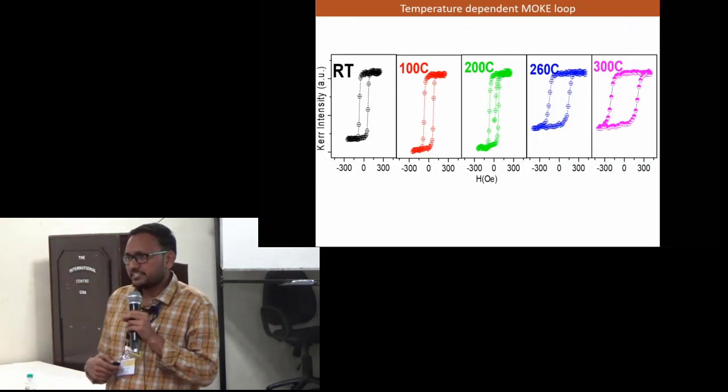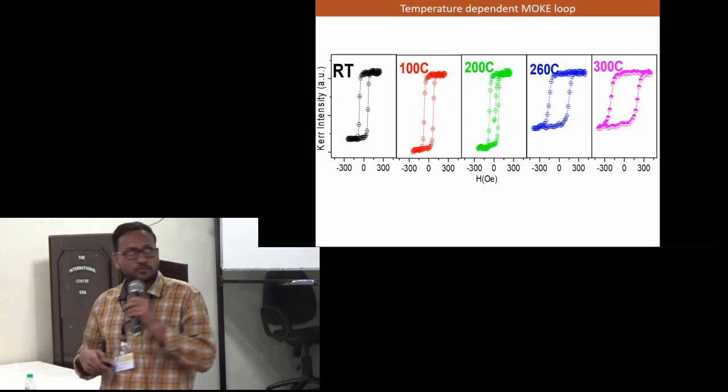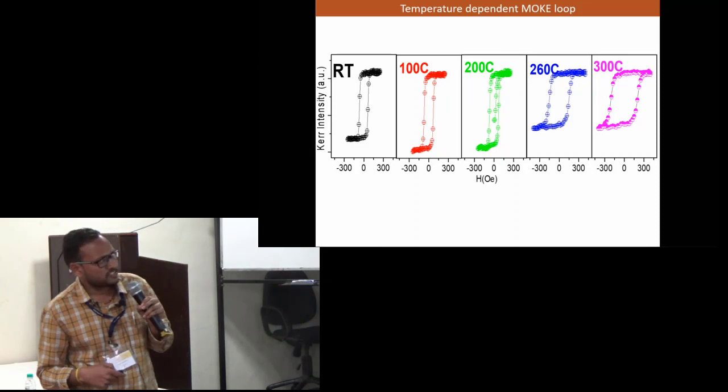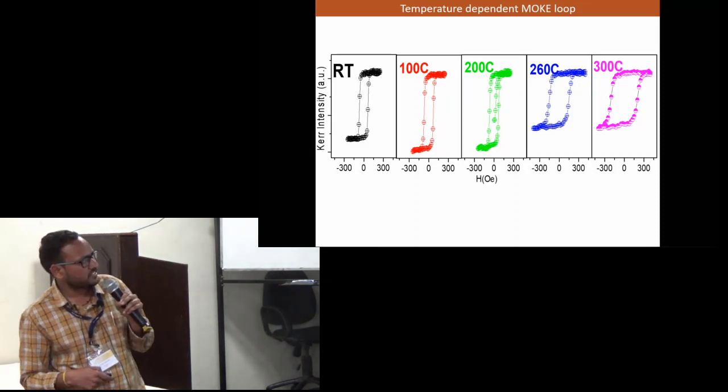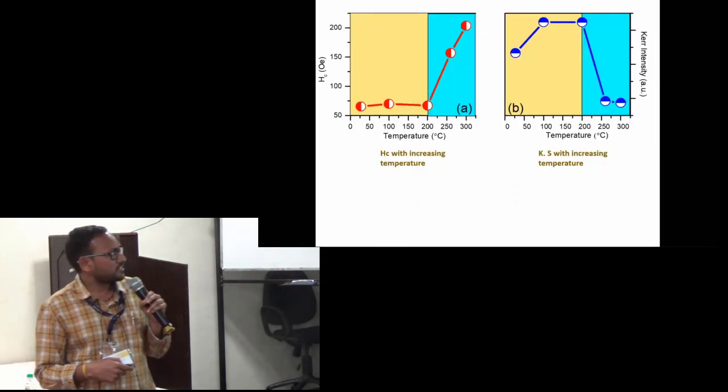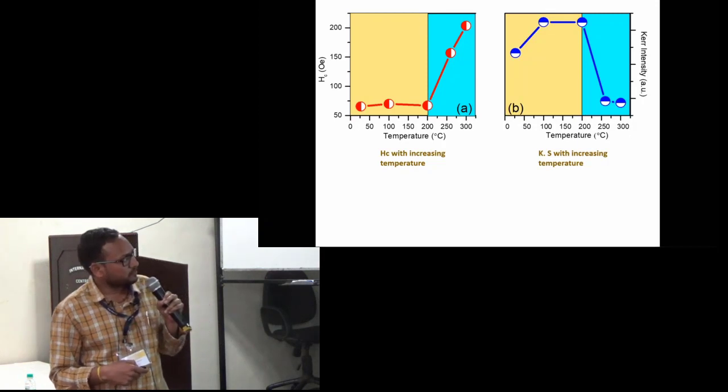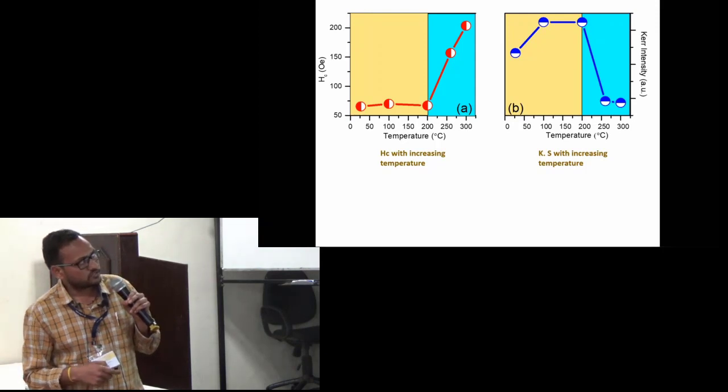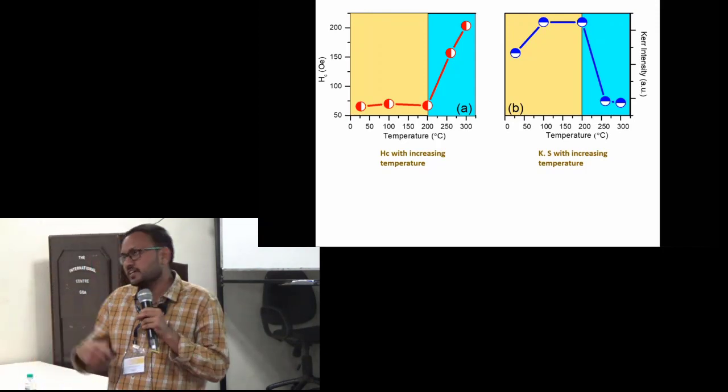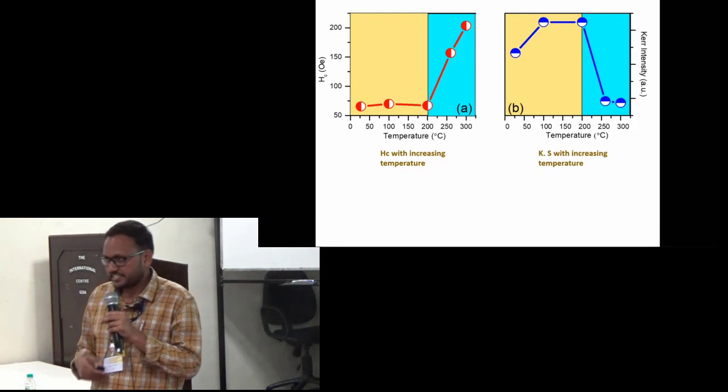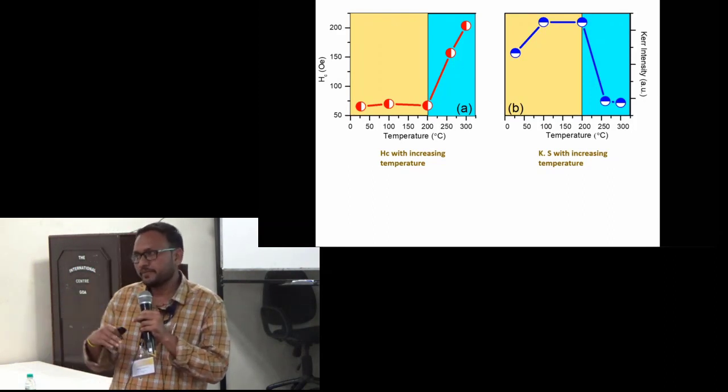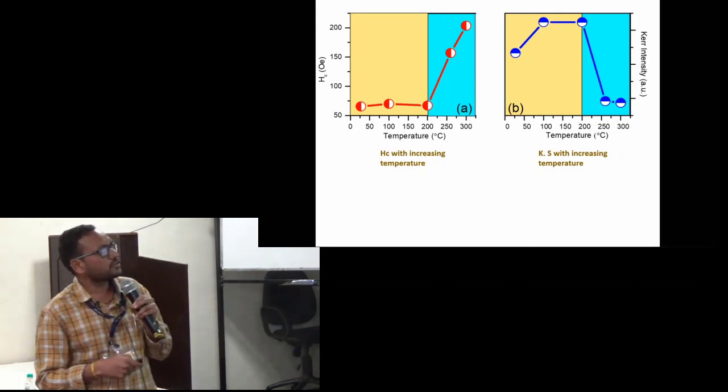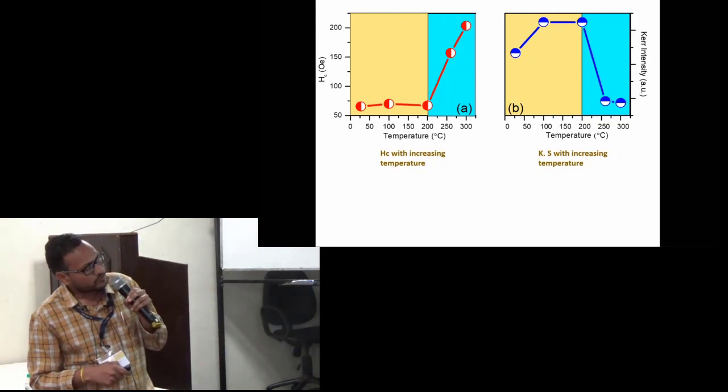In order to further study the temperature behavior of the magnetic properties at the interfaces, we analyzed my sample at different temperatures. Here are some representative graphs at different temperatures. Here we show that the coercivity gets abruptly high beyond 200 degrees Celsius, whereas my Kerr intensity signal gets reduced beyond 200 degrees Celsius. This may be due to because from 200 degrees Celsius, the diffusion of my Fe metals gets more and more deep into the polymers, so that the overall magnetic contribution reduces.